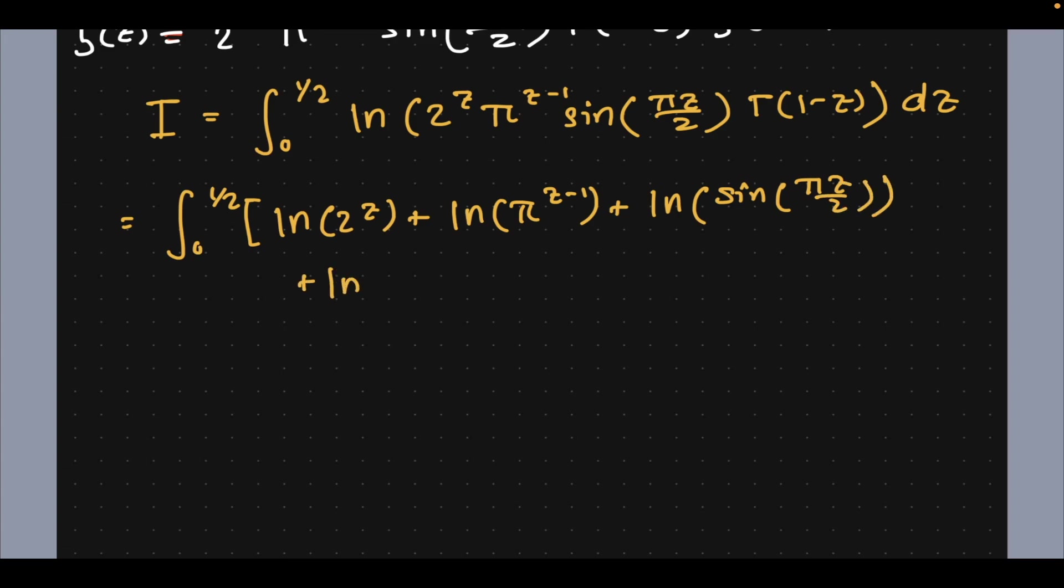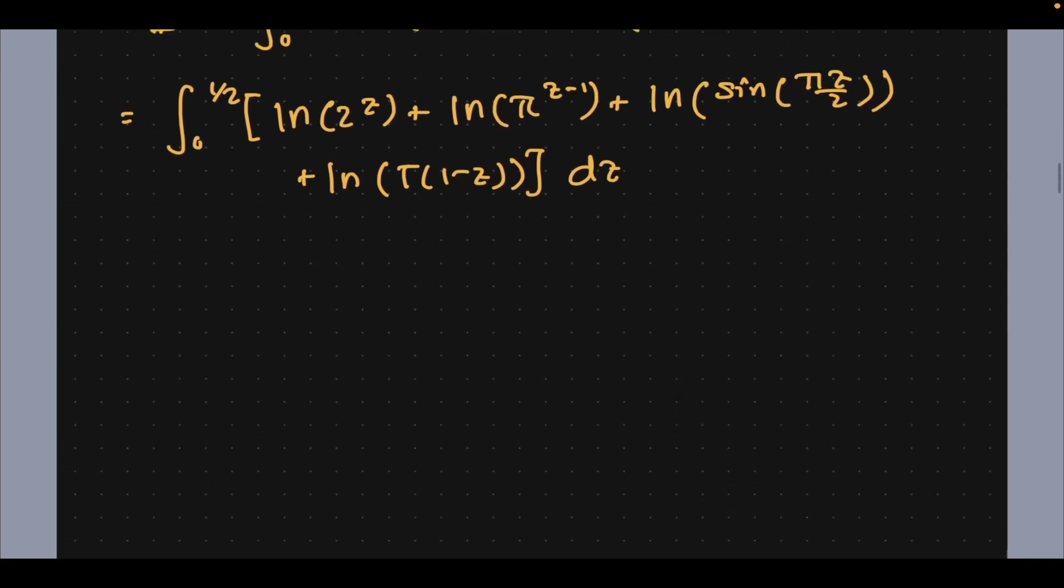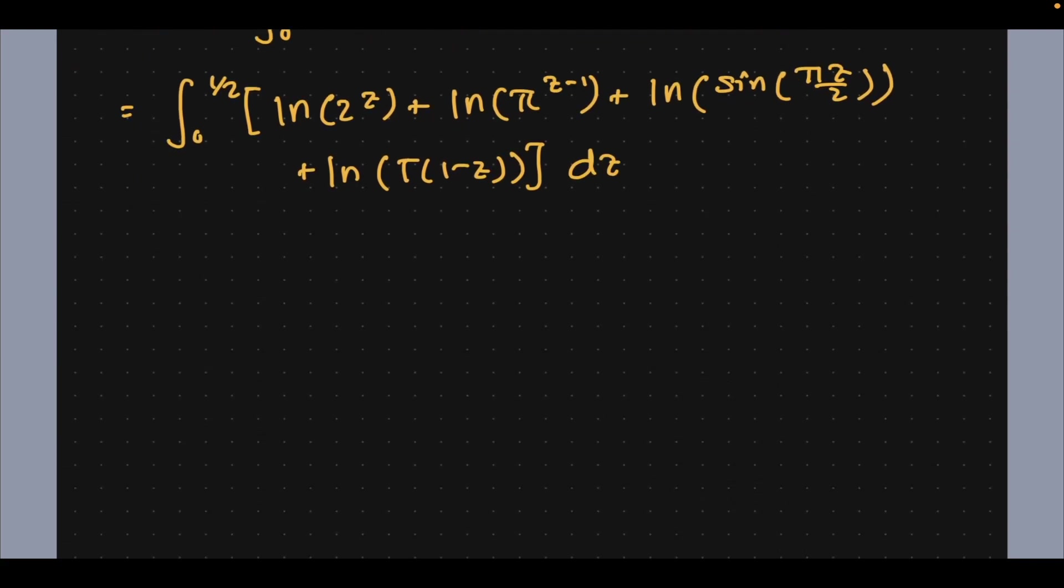Plus natural log of gamma(1-z) dz. We can split everything up into a bunch of integrals, so there's going to be effectively four integrals we have to consider separately.